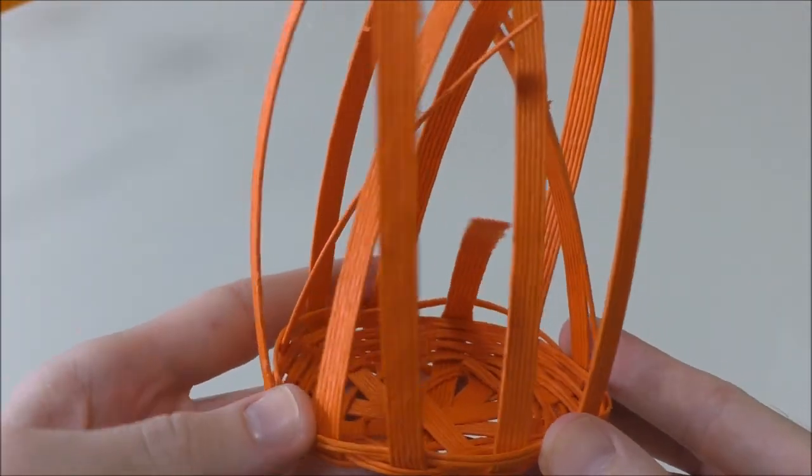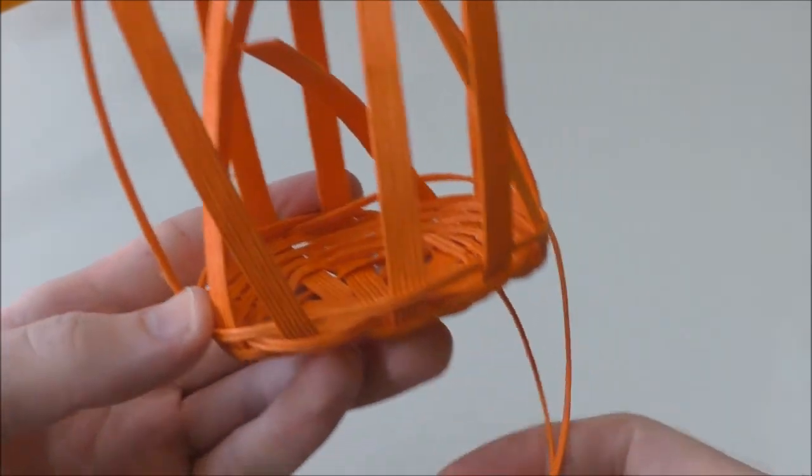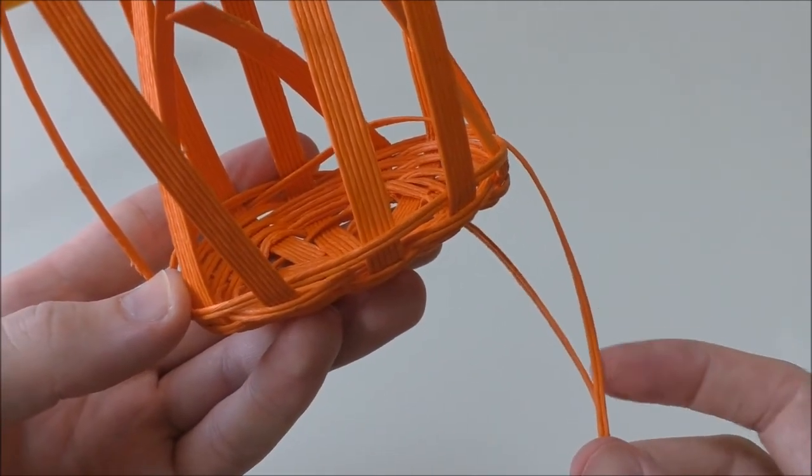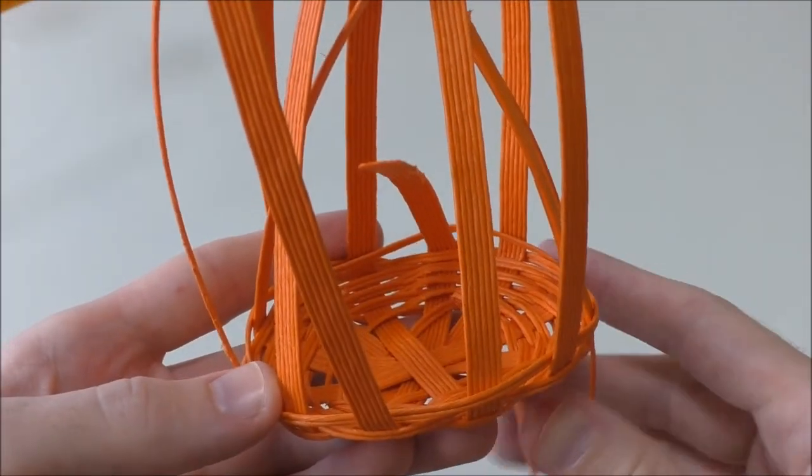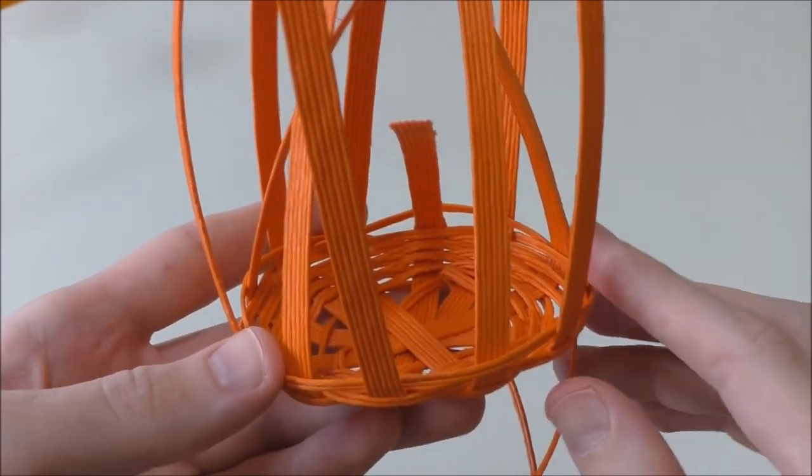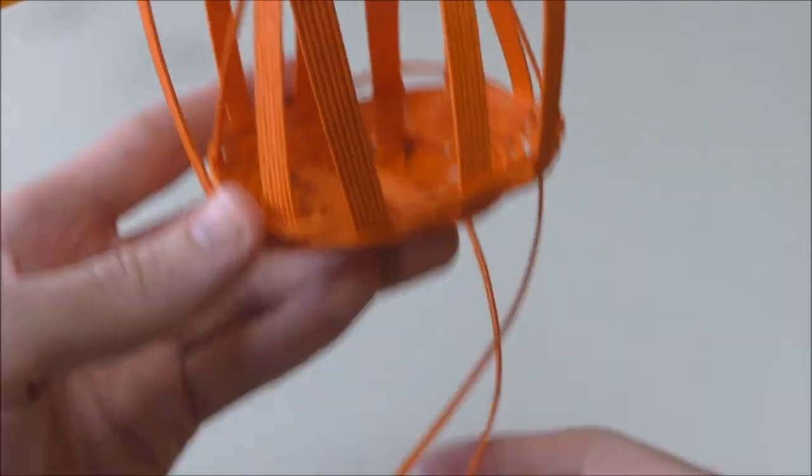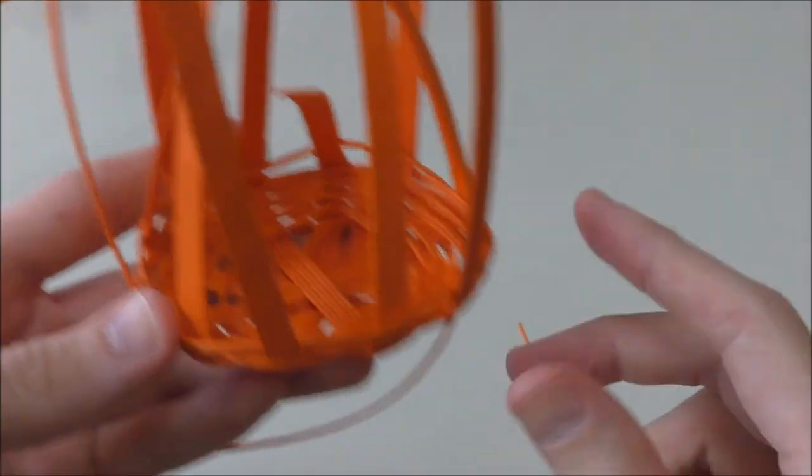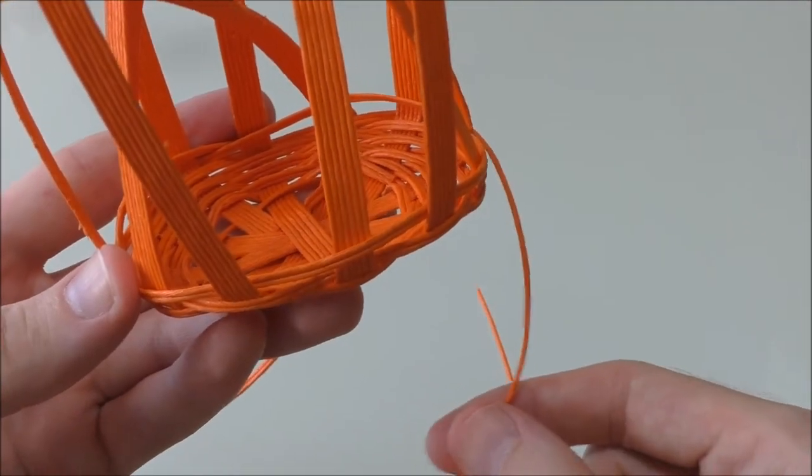Once you have all the edges pointing up like this, you just use the remaining pieces of the thin string to continue weaving. According to the instructions you should be able to go around nine more times. If you can't, just glue one of the remaining pieces to a one centimeter piece at the end here like we did to create the first weaving piece.